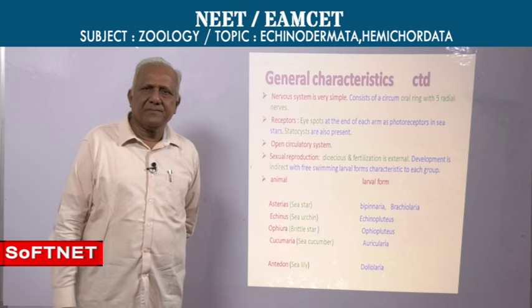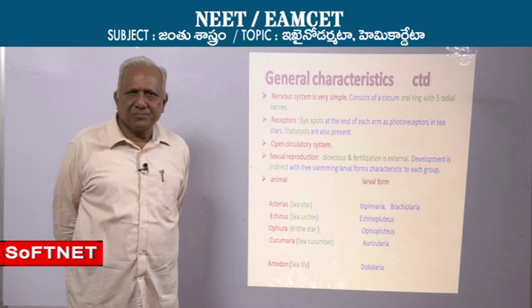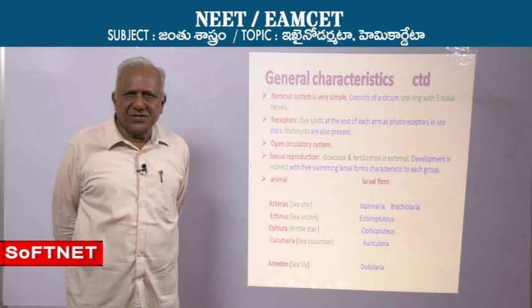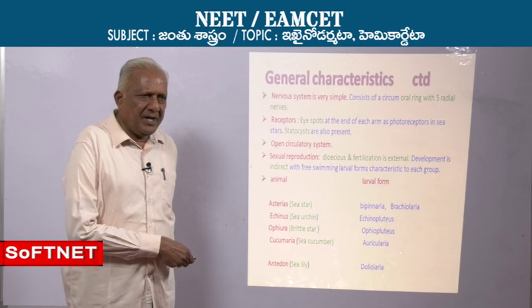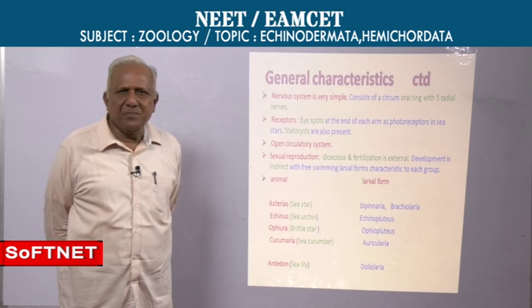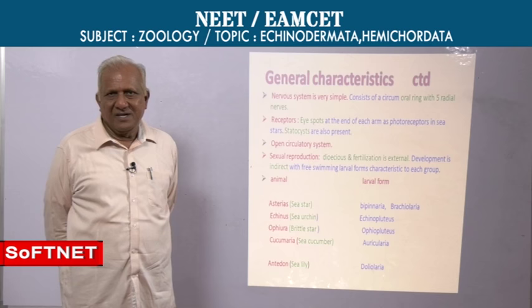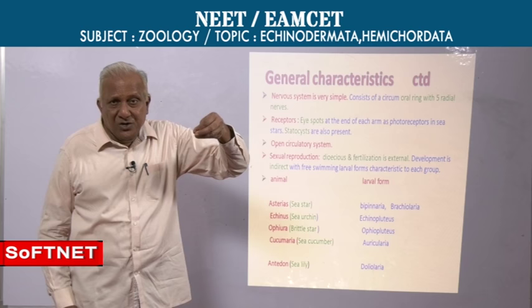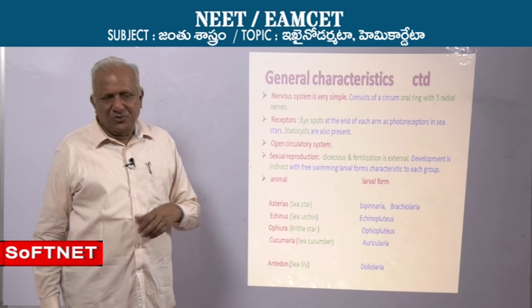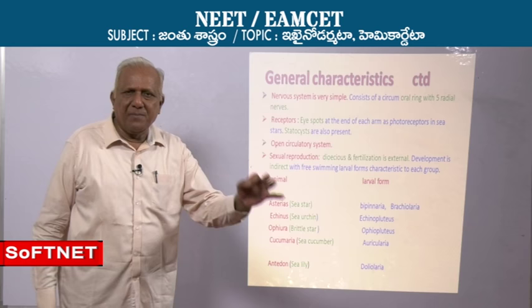In one example, a question was asked: which of the following is the ancestor of echinoderms? Dipleurula is the hypothetical ancestor of Echinodermata — it is not in existence; it is hypothetical.